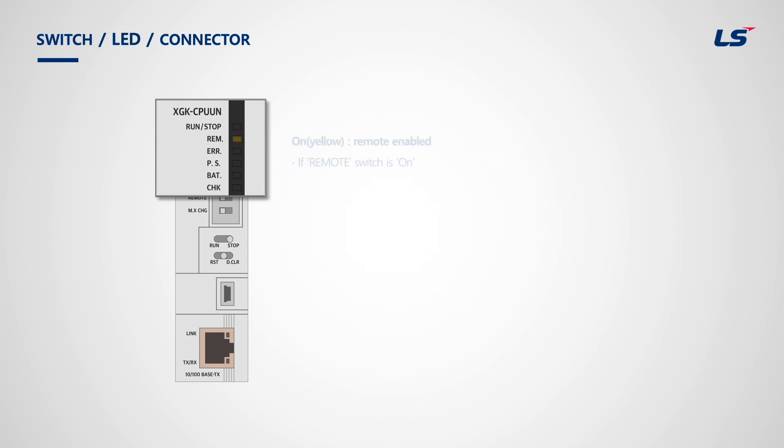The second LED is the Remote LED, and the yellow light is turned on when the remote switch is on. So when its status is normal, the Run-Stop LED is green and the Remote Switch LED is yellow.